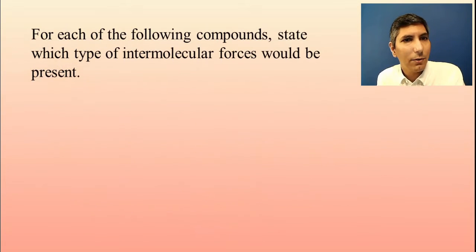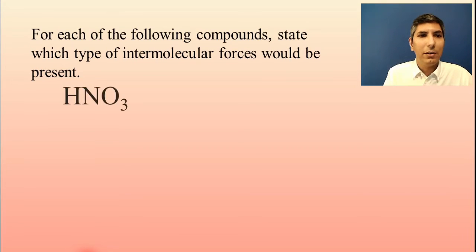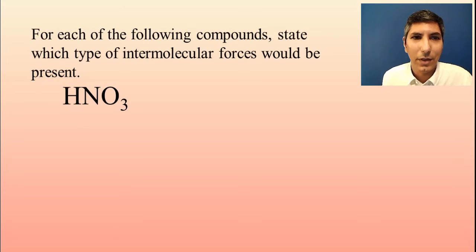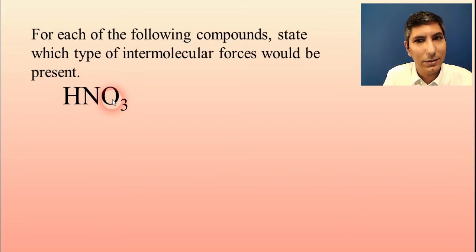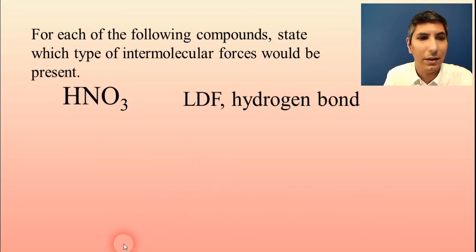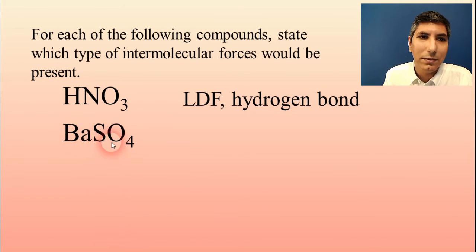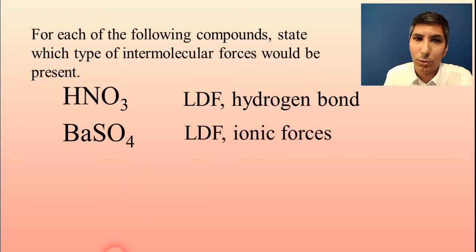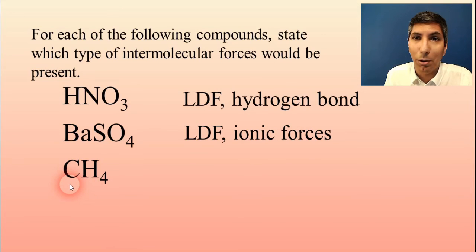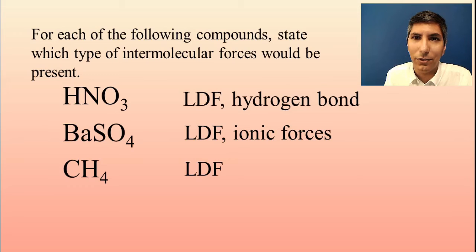Let's try an example: for each of the following compounds, state which type of intermolecular forces are present. By default, everything has London dispersion forces. The first compound also has hydrogen, oxygen, and nitrogen, so it's safe to say it will have hydrogen bonding as well. What about barium sulfate? By default, London dispersion forces — but it's a metal and a nonmetal, so cation and anion: it also has ionic forces. What about methane? That's a nonpolar molecule, so just London dispersion forces — nothing else, because it is a nonpolar structure.